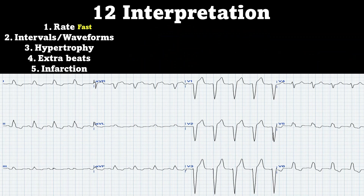Now we're going to get into our 12-lead interpretation. This is our sinus tachycardia, which now includes the width. So first off, we know the rate is going to be fast. Now we're going to look at our intervals and waveforms — looking for extended PRIs, which can signify a first degree AV block, or left bundle branch block, or right bundle branch block. So this one is going to be a left bundle branch block.